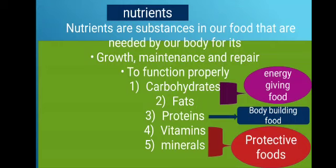What are nutrients? Nutrients are substances in our food that are needed by our body for its repair, growth, maintenance, and to function properly. We need different nutrients. Nutrients include carbohydrates, fats, protein, vitamins and minerals.